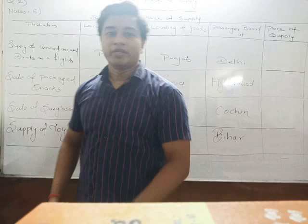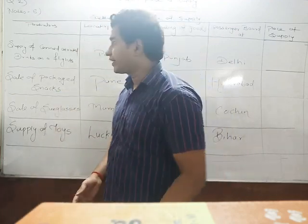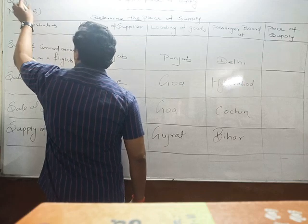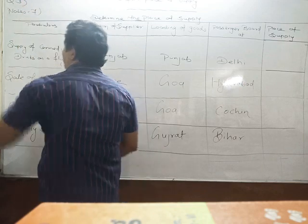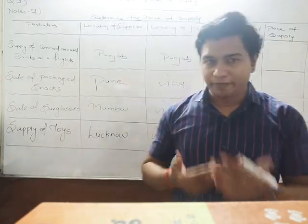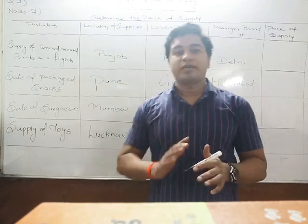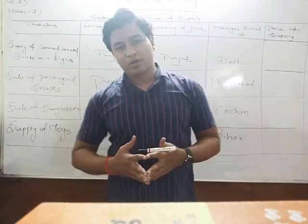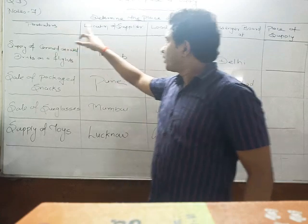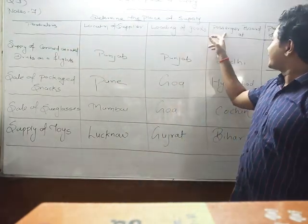We are continuing with our next question, that is question number seven. We are going to solve the third question. The topics are: location of supplier, loading of goods, and passenger boarding.